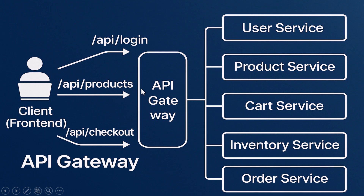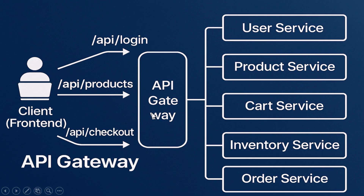When the customer checks out, the front end makes a single call to /api/checkout. The gateway knows this action involves multiple services — the cart, the inventory, the order, and the payment — so it either coordinates those requests or hands them off to a backend-for-frontend service. From the client's perspective, everything is simple and clean: just one domain to call, one token to manage, one API contract to worry about.